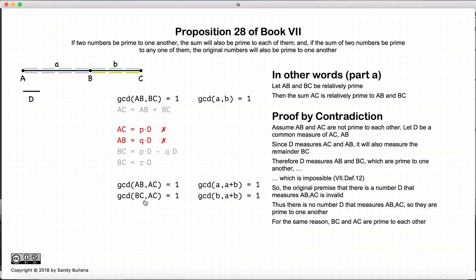Using a similar argument, we can show that BC and AC are relatively prime. Same argument. So thus we've shown the first part of this proposition, which given two numbers a and b, if they are relatively prime, then they are each relatively prime to the sum.